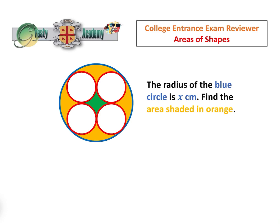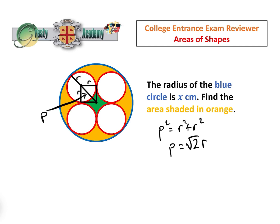In either method, we need to find the radius of the red circle. So let's draw a square here. That's the centre of the blue circle and that's the centre of the red. Now clearly that distance is r — the radius of the red circle. Let's draw another line here, and that is also r. Let's call this diagonal distance p. By Pythagoras, p squared equals r squared plus r squared, so p equals root 2r.